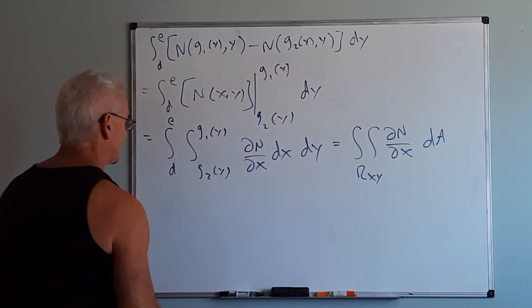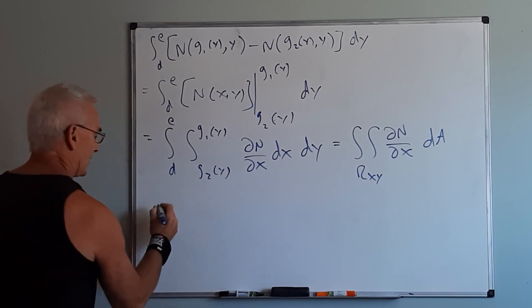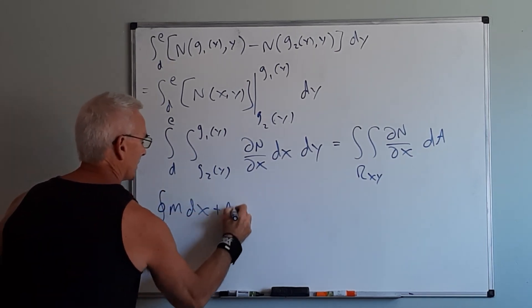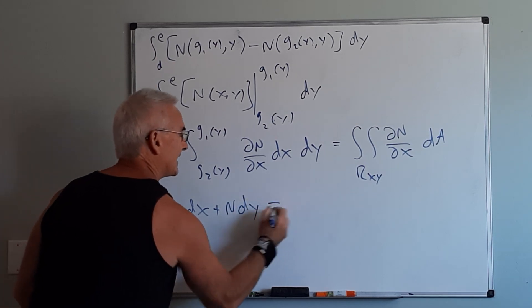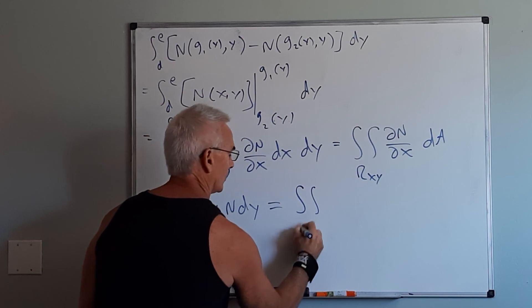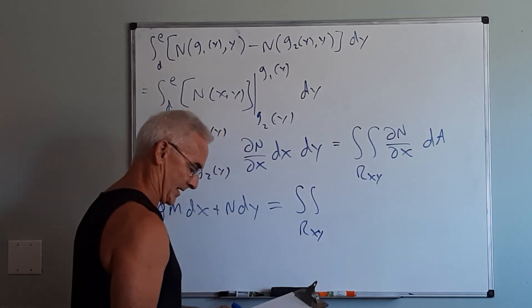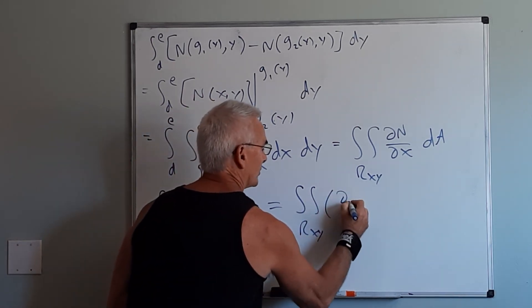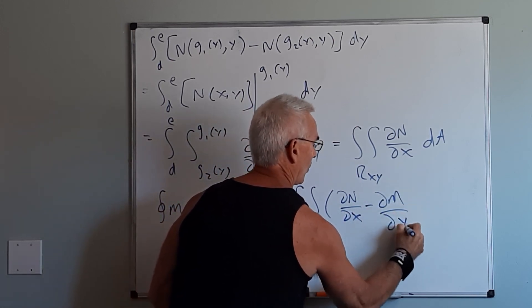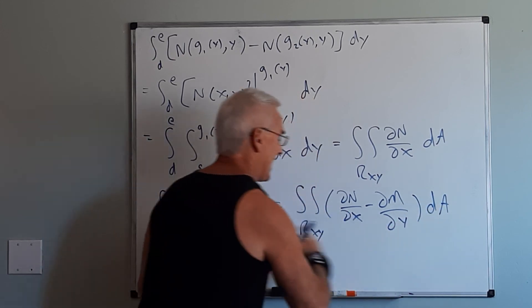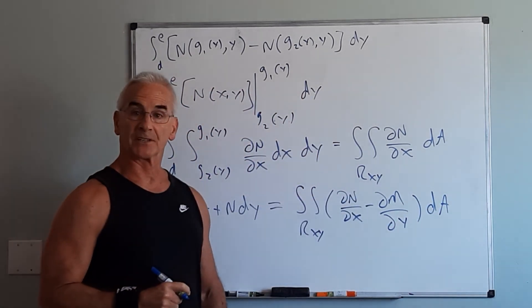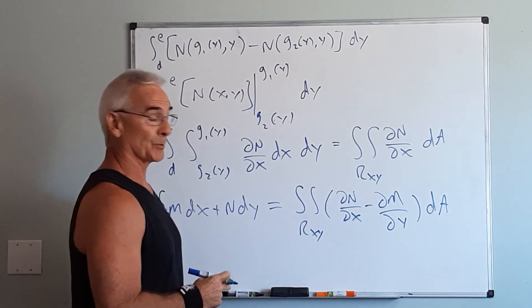So ultimately what we've seen then in the final analysis here is that the integral of m dx plus n dy is equal to the sum of my two results which would be the double integral over the region in the xy plane of the partial of n with respect to x minus the partial of m with respect to y dA. And this is Green's Theorem. Now on the next video I'm going to do several examples so you can see where this would work.